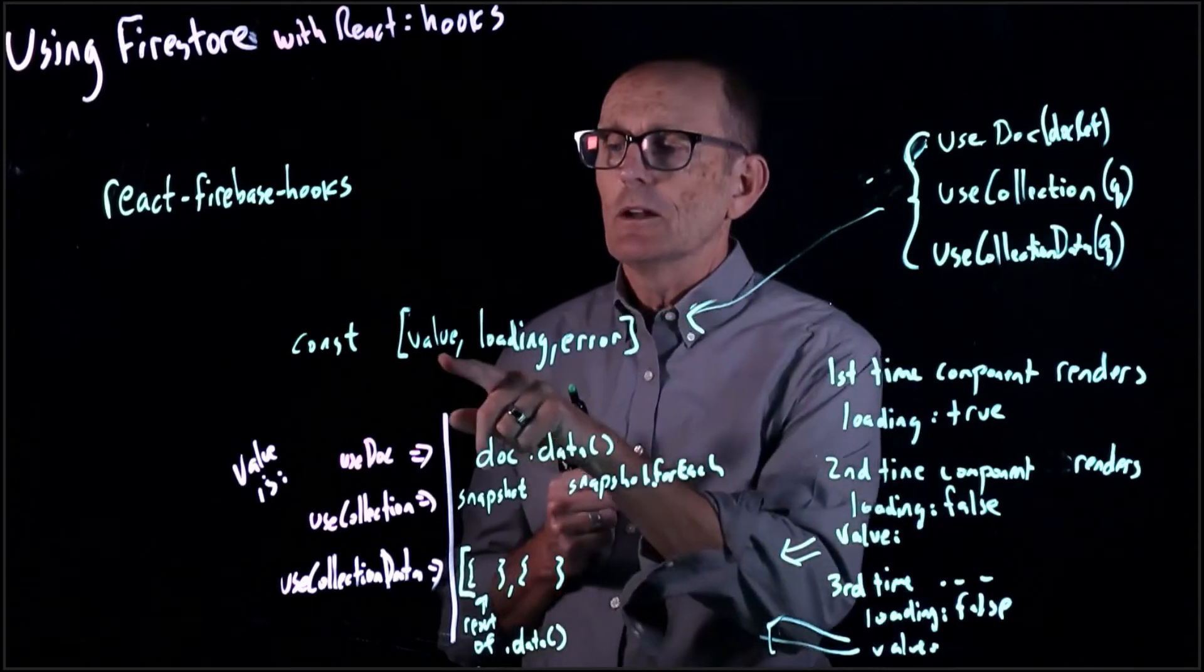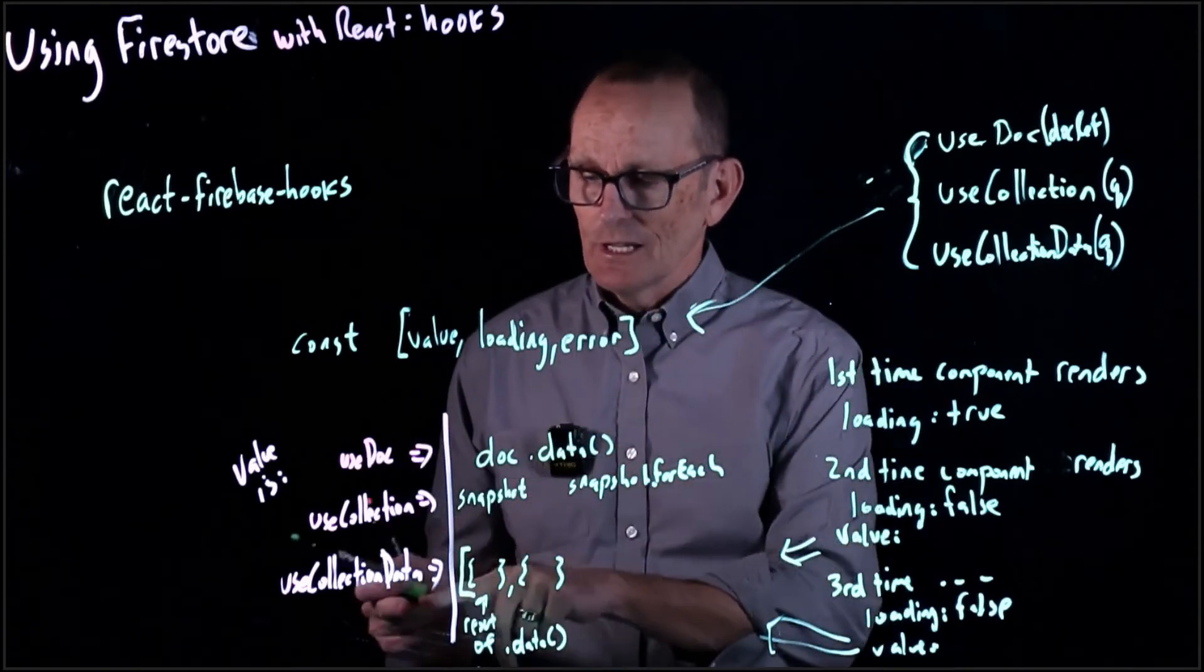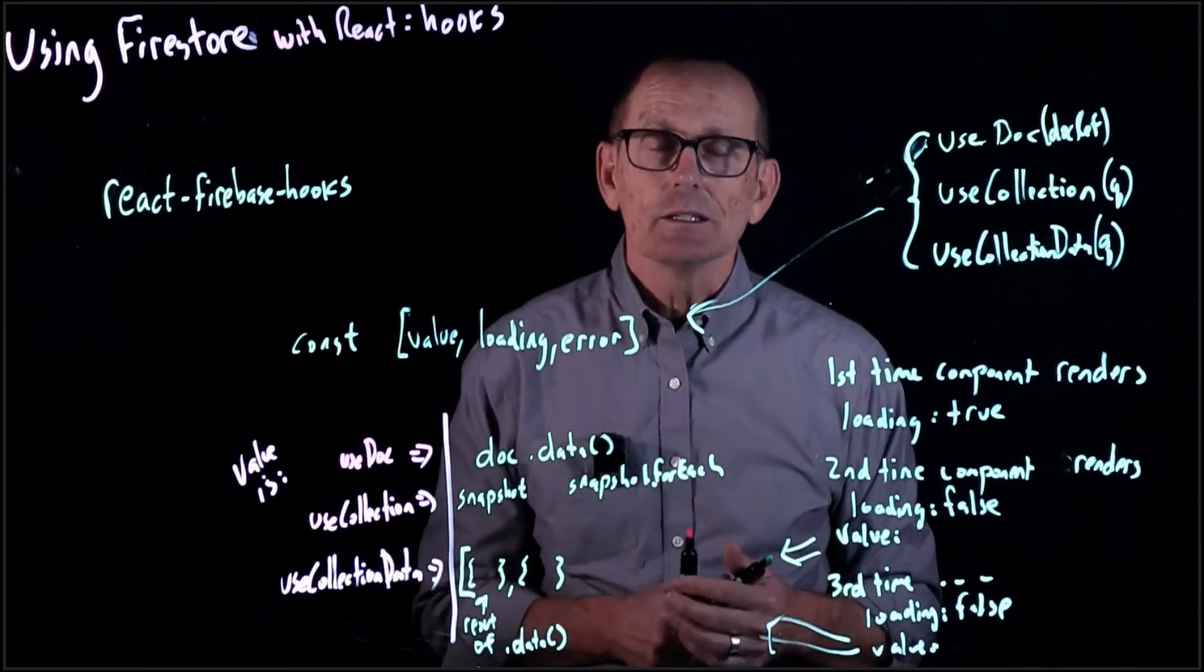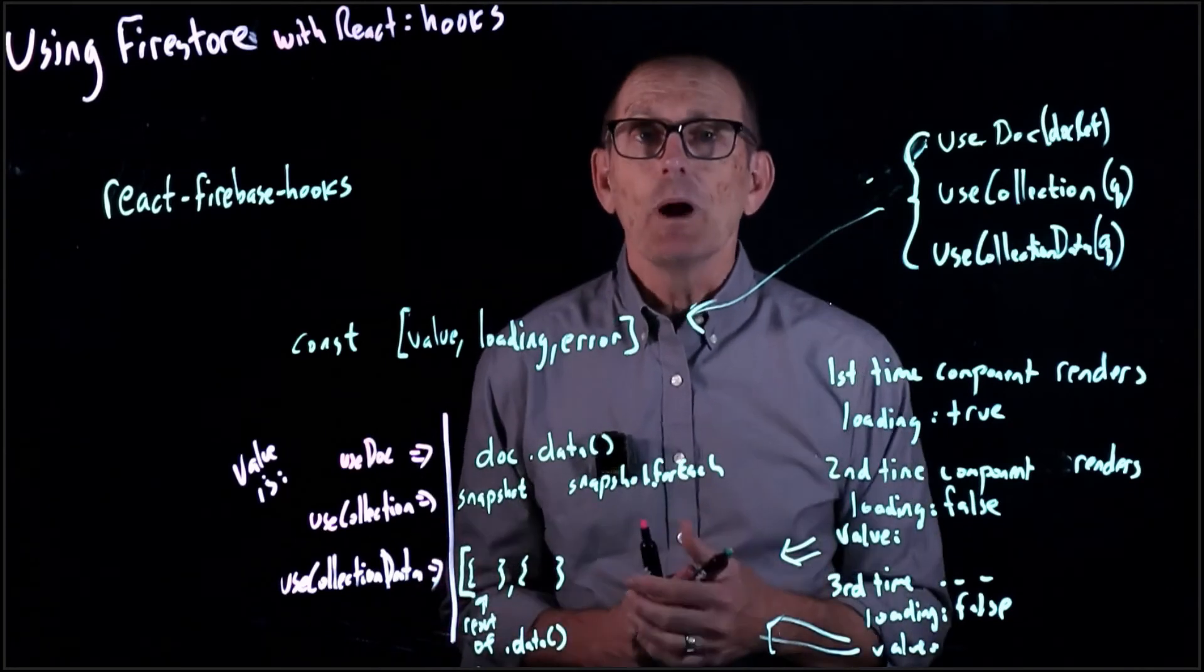The second time, we're going to go ahead and get all our restaurants, and if we use useCollectionData, restaurants are just going to be in this array here. So that's exactly how we want them.